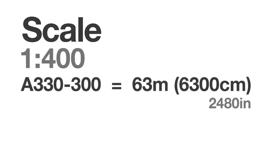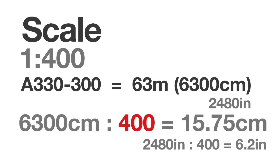First up is the scale, and I want to explain what the scale means. The best way is a quick example. I chose a 1:400 scale model because that's the scale I collect. For example, an Airbus A330-300 has a length of 36 meters or 6,300 centimeters. You simply divide it by 400 — or whichever scale you have — and this gives you 15.75 centimeters. That's the size of the model. The scale tells you what size the model is going to be compared to the real thing.